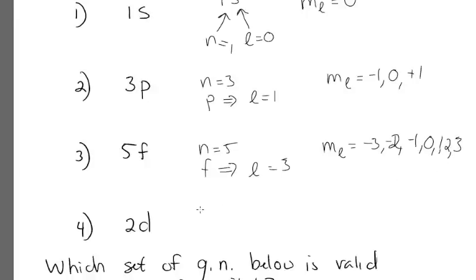And finally, 2d. Well, it would look like n equals two, and for d, we would say l equals two. But the rule is that l could only be from zero to n minus one, so you can't have an l equals two. So 2d does not exist. That was a trick question. The value of l cannot equal the value of n.